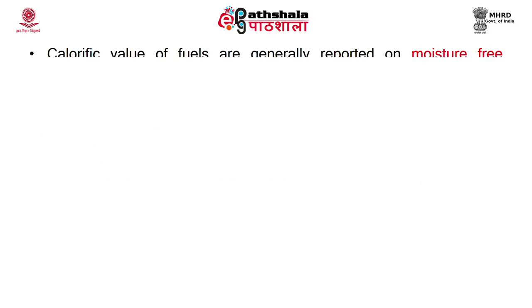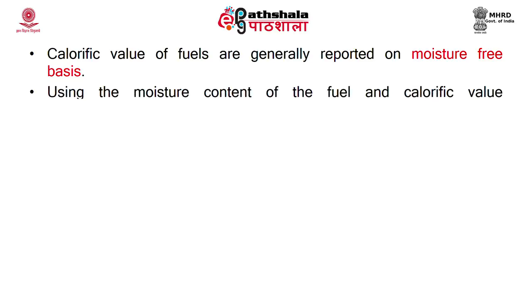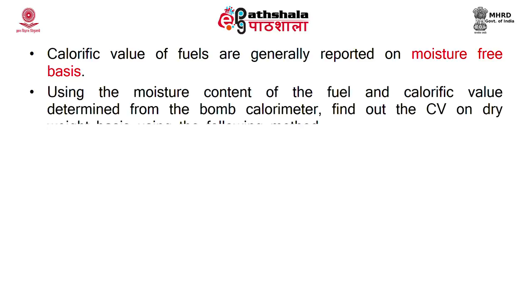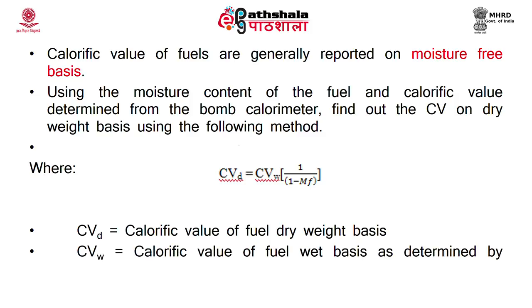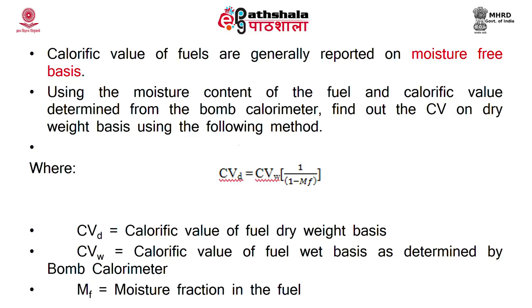The calorific value of fuels is generally reported on a moisture-free basis. Using the moisture content of the fuel and calorific value determined from the bomb calorimeter, find the calorific value on dry weight basis using: CVd = CVw × 1/(1 − Mf), where CVd is the calorific value on dry weight basis, CVw is the calorific value on wet basis from the bomb calorimeter, and Mf is the moisture fraction in the fuel.